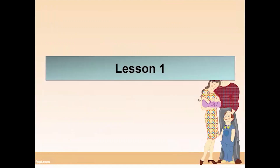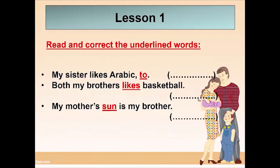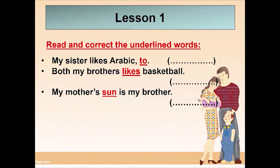Here we have an exercise: read and correct the underlined words. 'My sister likes Arabic too' — we replace 'to' with 'too.' 'Both my brothers likes basketball' — corrected to: 'Both my brothers like basketball.' 'My mother's sun is my brother' — we replace 'sun' with 'son.'